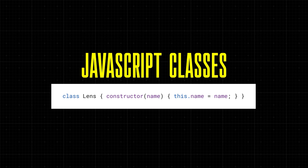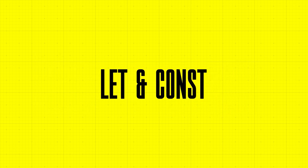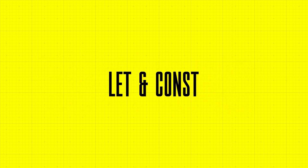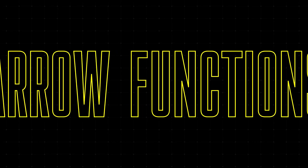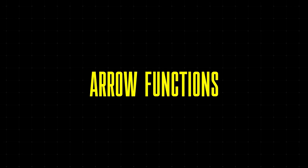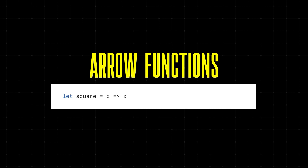We also have the introduction of let and const for variable declaration. Unlike var, let and const have block scope, which means they're only available within the block they're declared in. Here's an example. Arrow functions were introduced in ES6 as well. These are a shorthand way to write function expressions, and they have the added benefit of referencing themselves, making them great for callback functions. This line of code creates a function that squares a number.